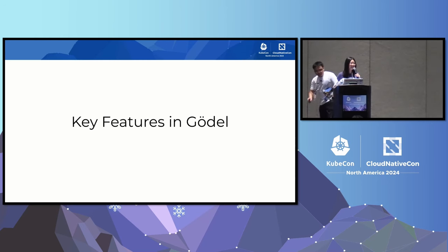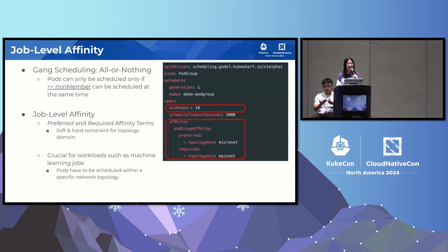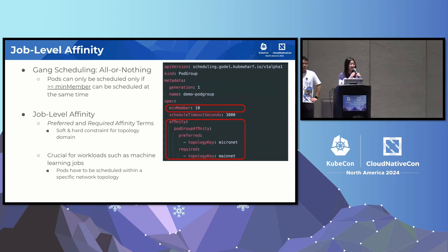Thank you, Ling Tong. Here are a few key features we want to highlight. First, let's look at job-level affinity, which is an advanced feature built upon gang scheduling. Gang scheduling achieves an all-or-nothing syntax through a CRD called pod group. In our pod group, we define a min-member, meaning only if pods greater than or equal to min-member can be scheduled at the same time will they proceed; otherwise, all remain in pending state.